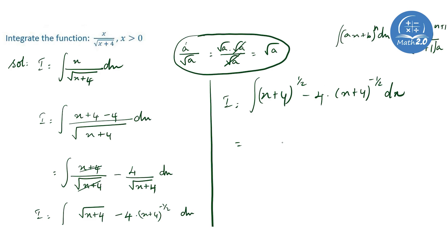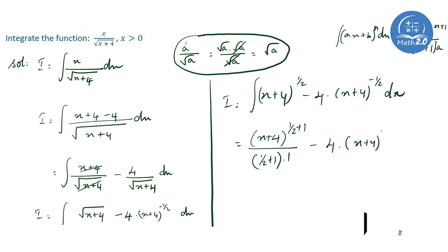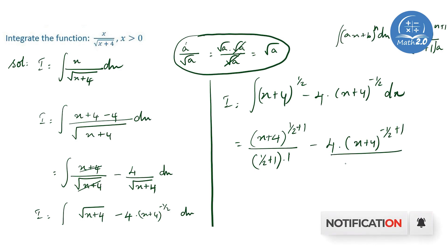When we apply the identity, we get x plus 4 to the whole power 1 by 2 plus 1, divided by 1 by 2 plus 1, with coefficient of x equal to 1, minus 4 into x plus 4 to the whole power minus 1 by 2 plus 1, divided by minus 1 by 2 plus 1, plus C.